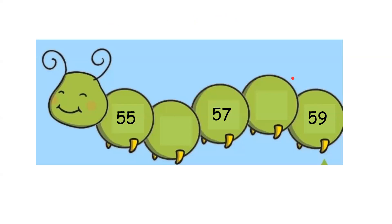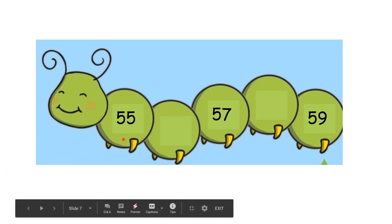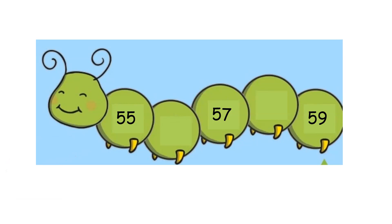Now let us do this question. This caterpillar has the number 55 written on it. If we skip one number, what will be the number written here? Remember your counting. So 55, then 56. Then it jumps one more number and reaches 57. Then one more jump — it will reach 58. Then one more and it will reach 59. Like this, we can get the entire sequence of this pattern.